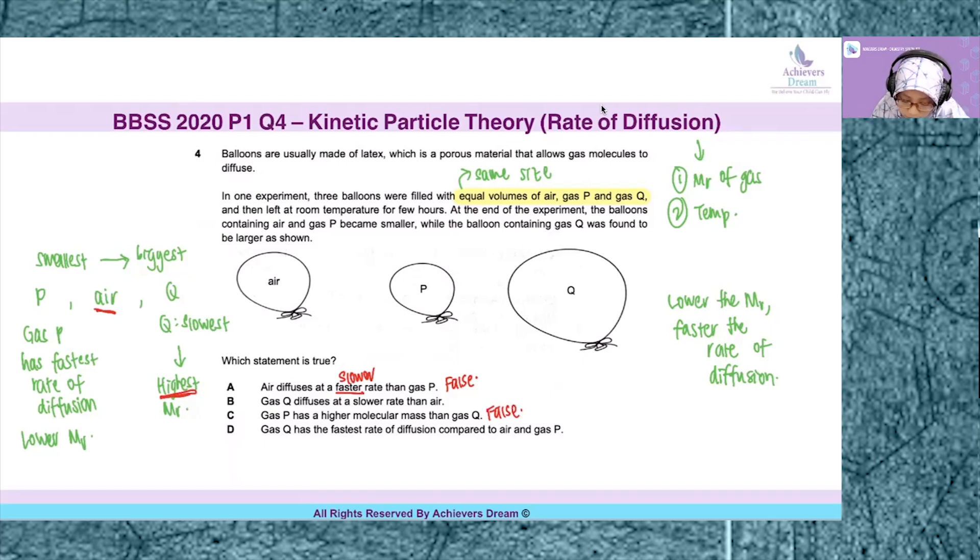When you look at option D, gas Q has the fastest rate of diffusion compared to air and gas P. Based on the size, we already know it has the slowest rate of diffusion, hence it is false.